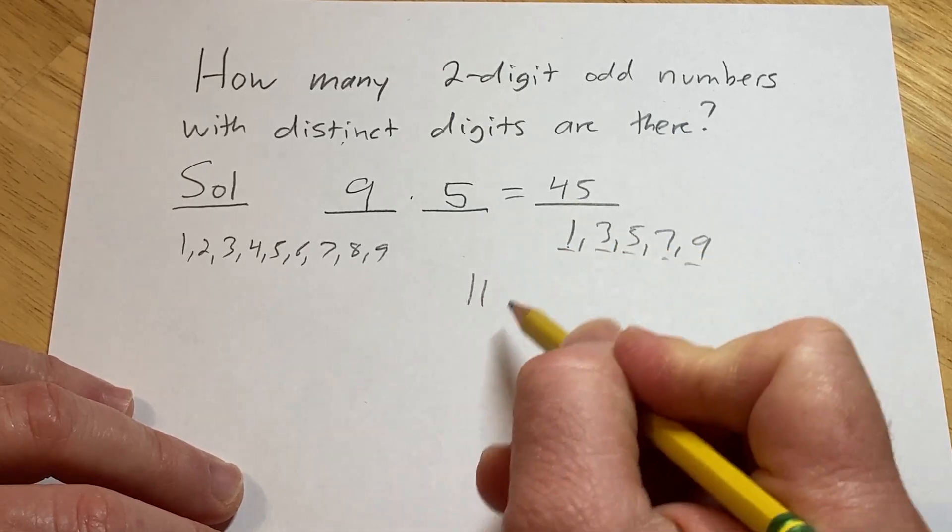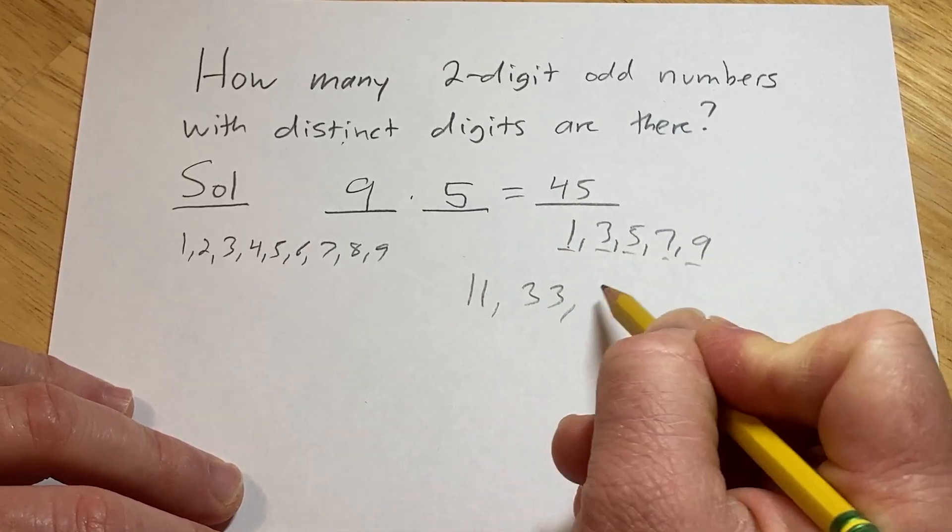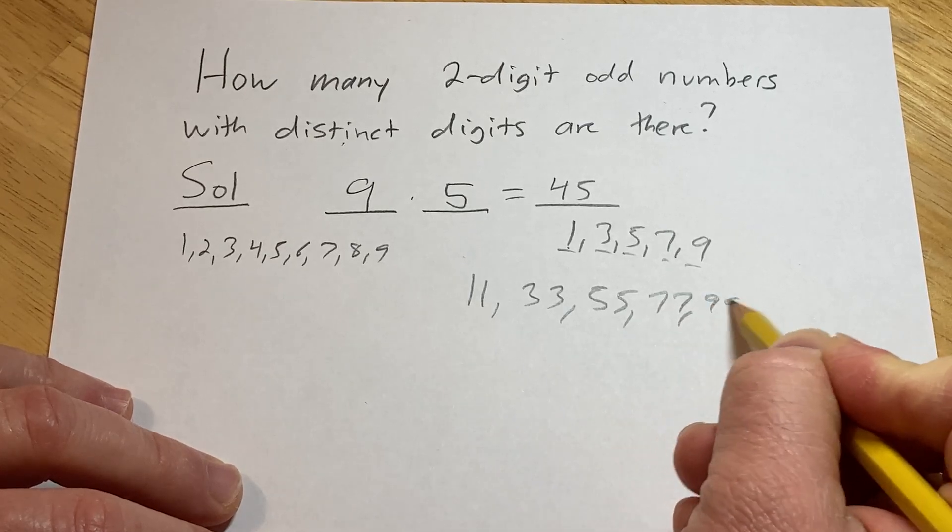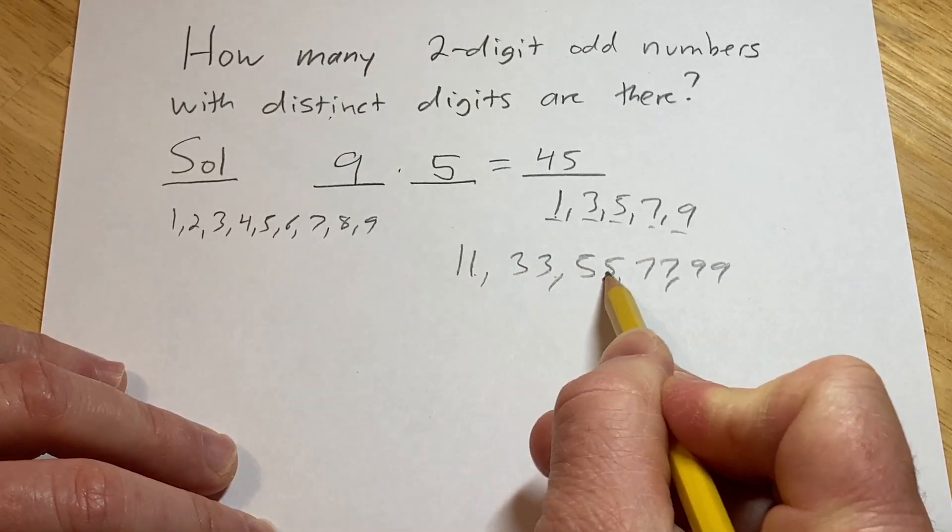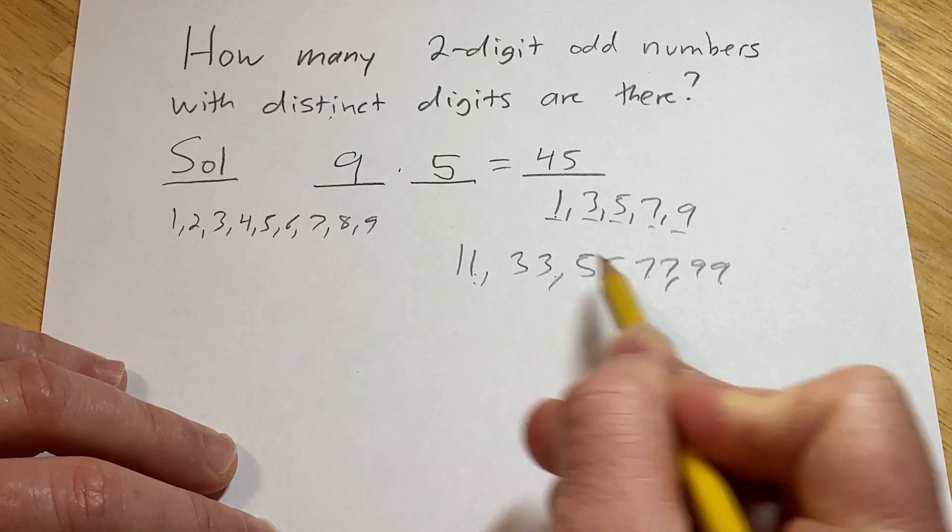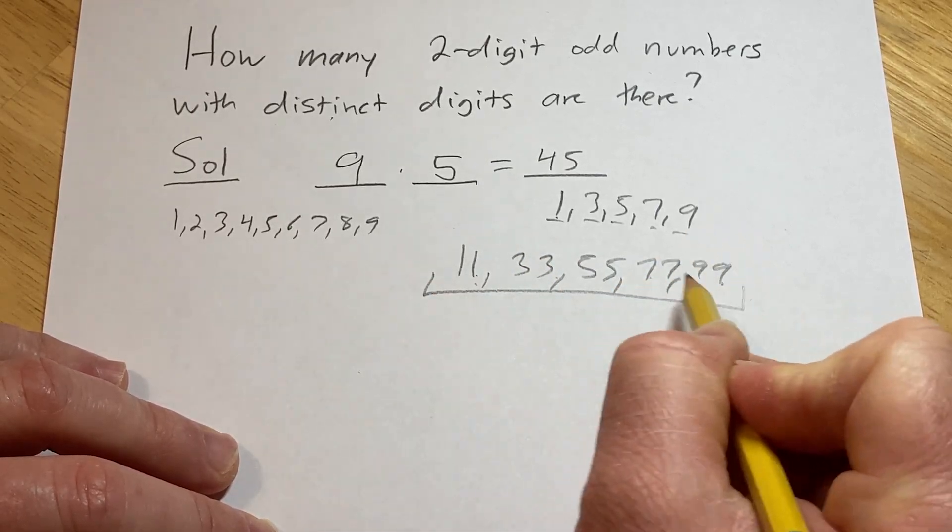And so if it's not distinct, it has to be a number like 11, or 33, or 55, or 77, or 99. So these are the two-digit odd numbers that don't have distinct digits, and there are five of them.